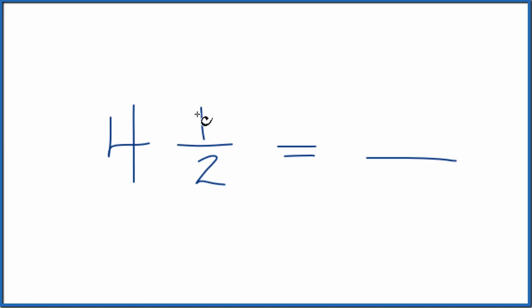Four times two is eight, plus one is nine, and then you just bring the denominator across.